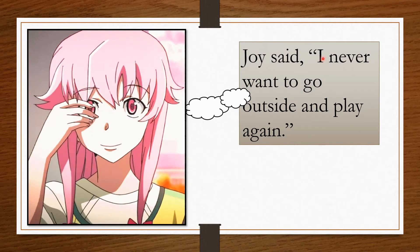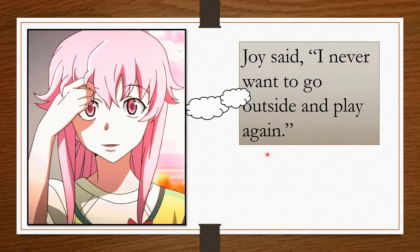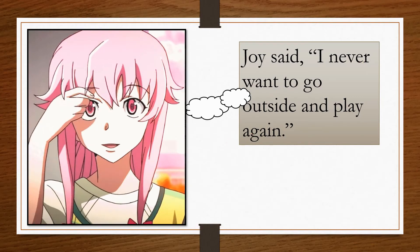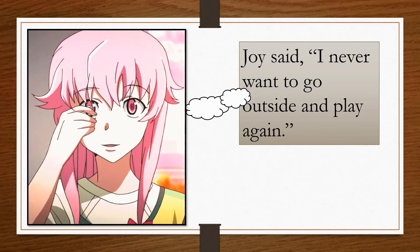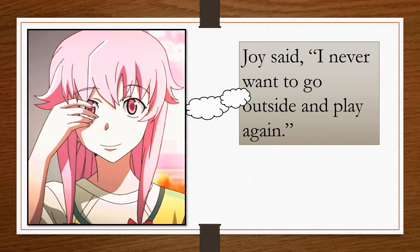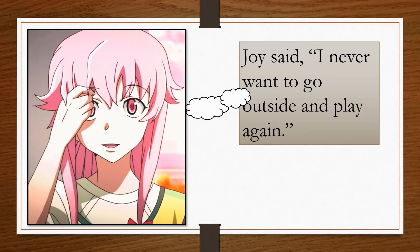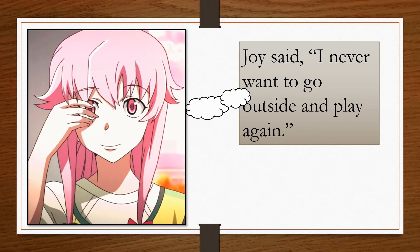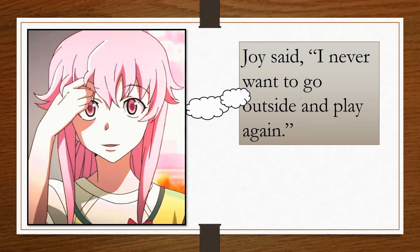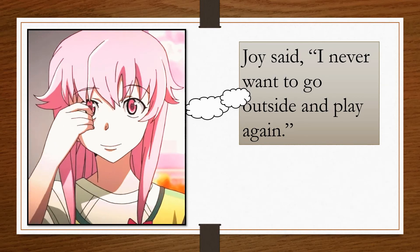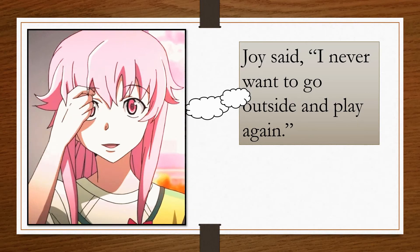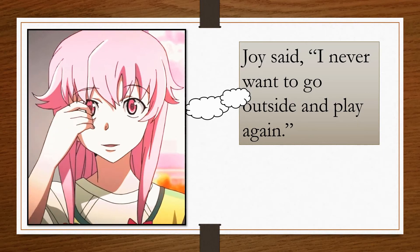Joy said, 'I never want to go outside and play again.' Why did she say that? Because she fell down and got hurt, she was afraid to go out and play again. If you were in Joy's place, what would you do? You should go back to play, but play carefully. Falling once doesn't mean you should stop playing.